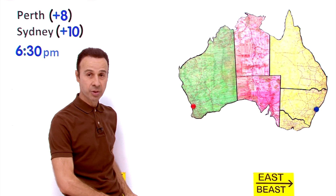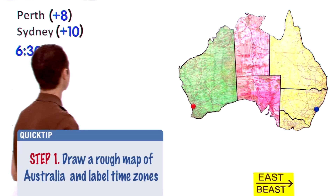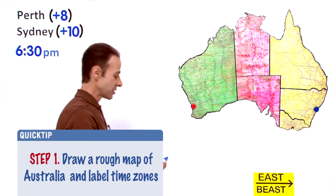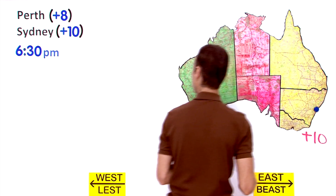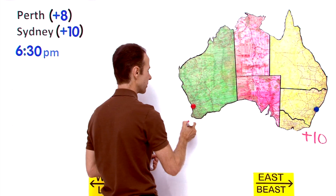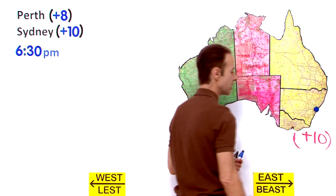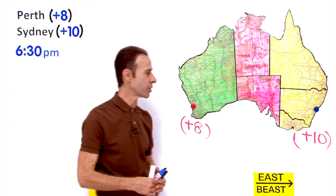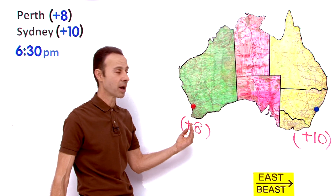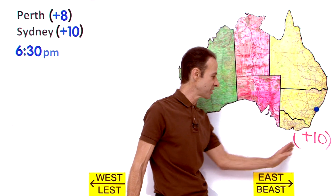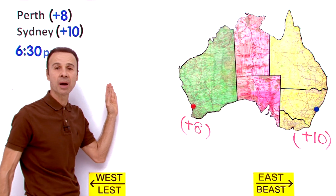Let's go through those 3 steps. Number 1, let's recognize that in Sydney it is Australian Eastern Standard Time at UTC+10, and in Perth it is Australian Western Standard Time at UTC+8. Since they are both east of universal time coordinate, they both have a plus sign.